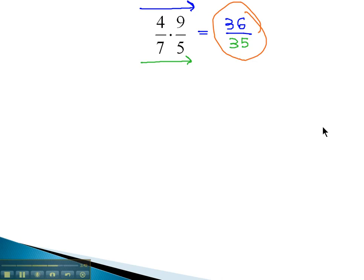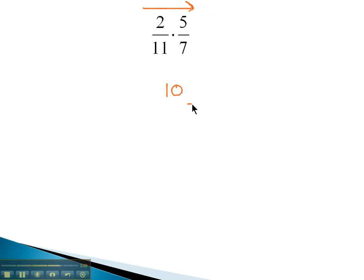Let's try one more example. Here we have 2 elevenths times 5 sevenths. Multiplying the numerators, 2 times 5 is 10. Over, multiply the denominators, 11 times 7 is 77. And we have our final solution.